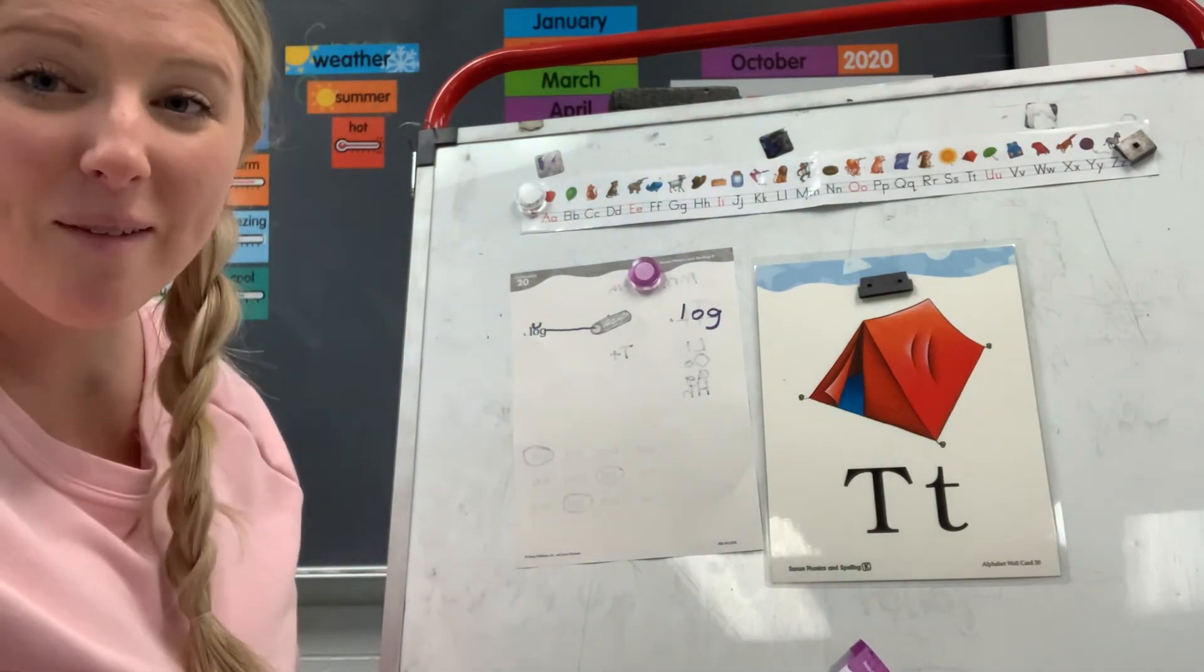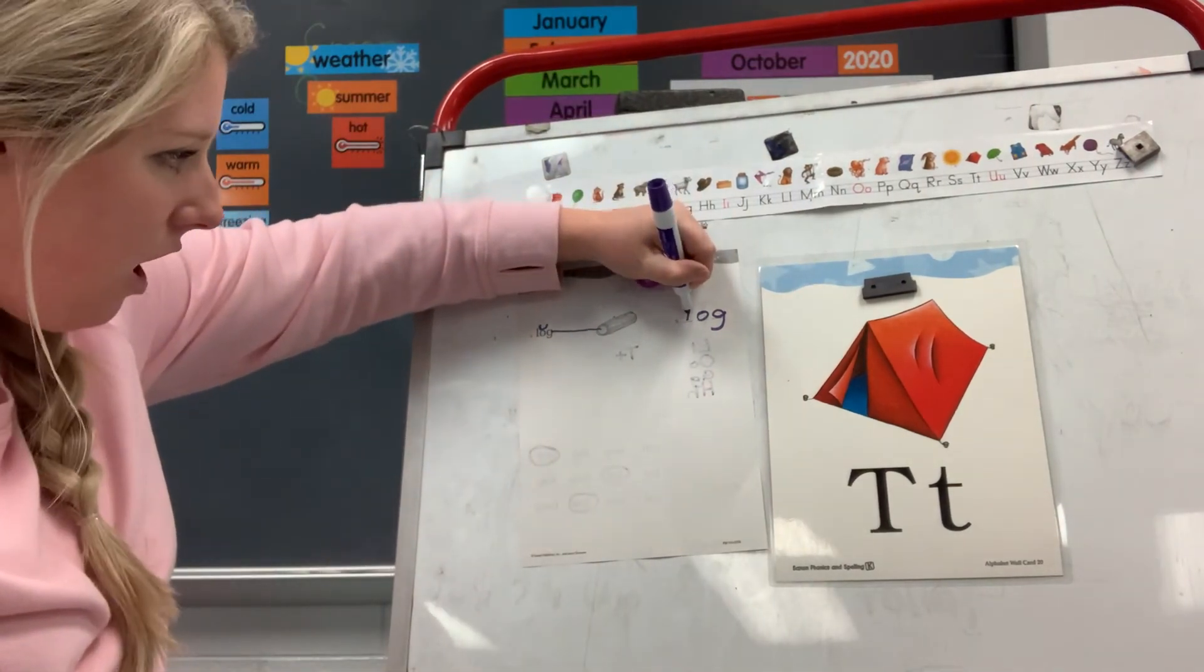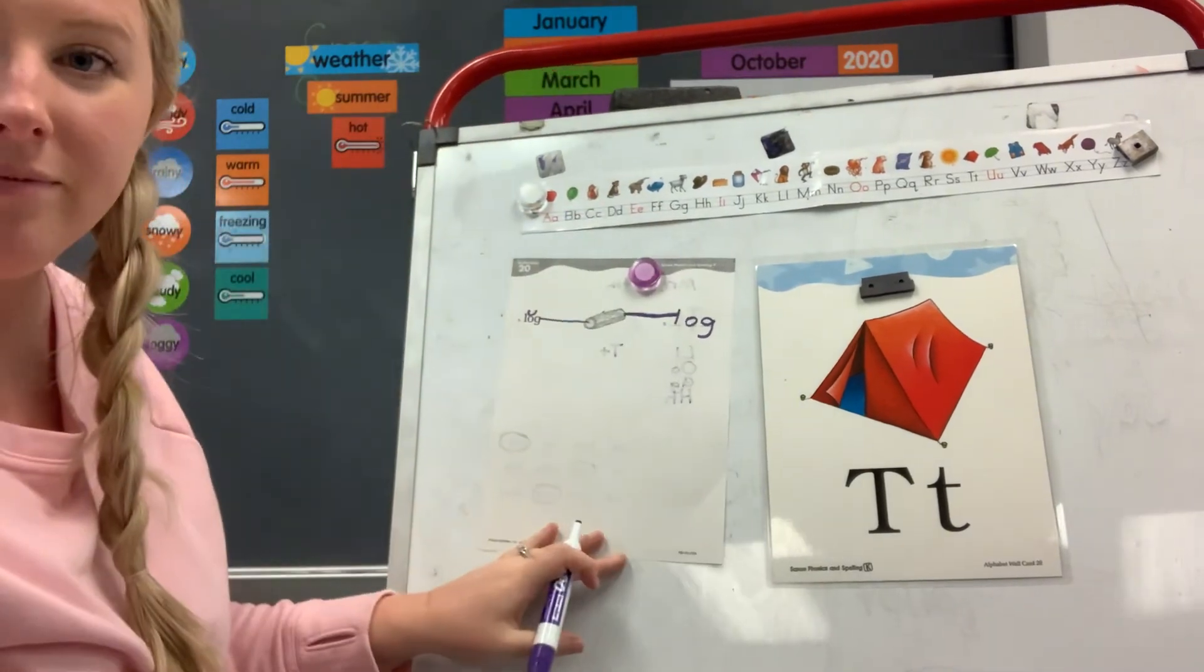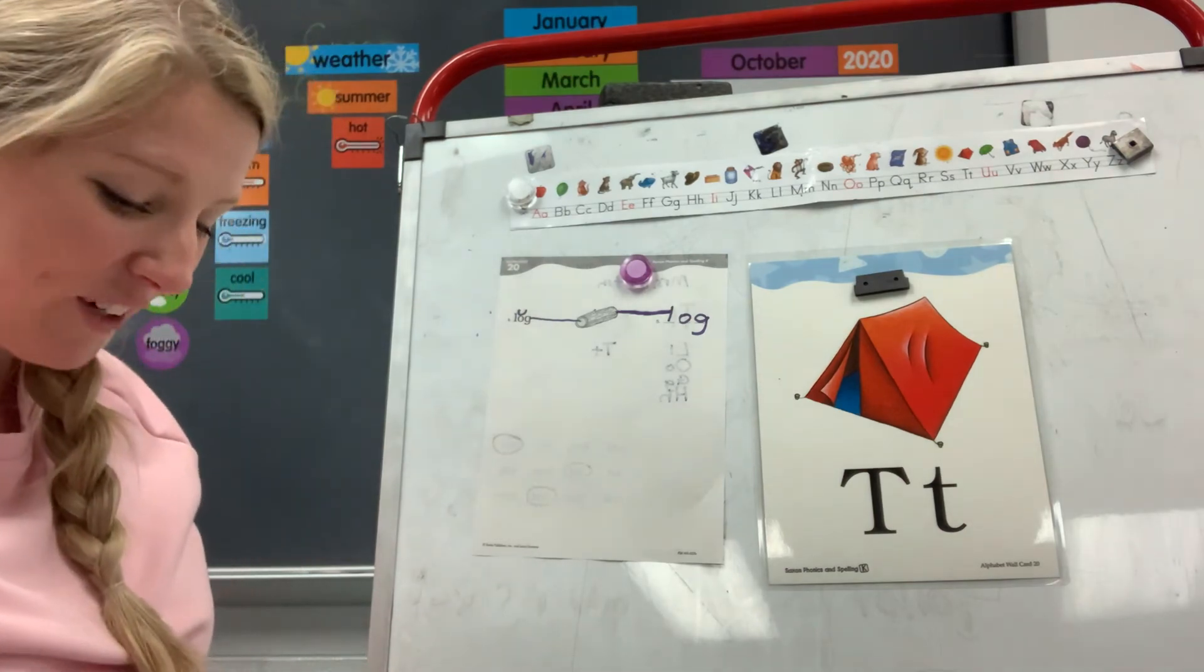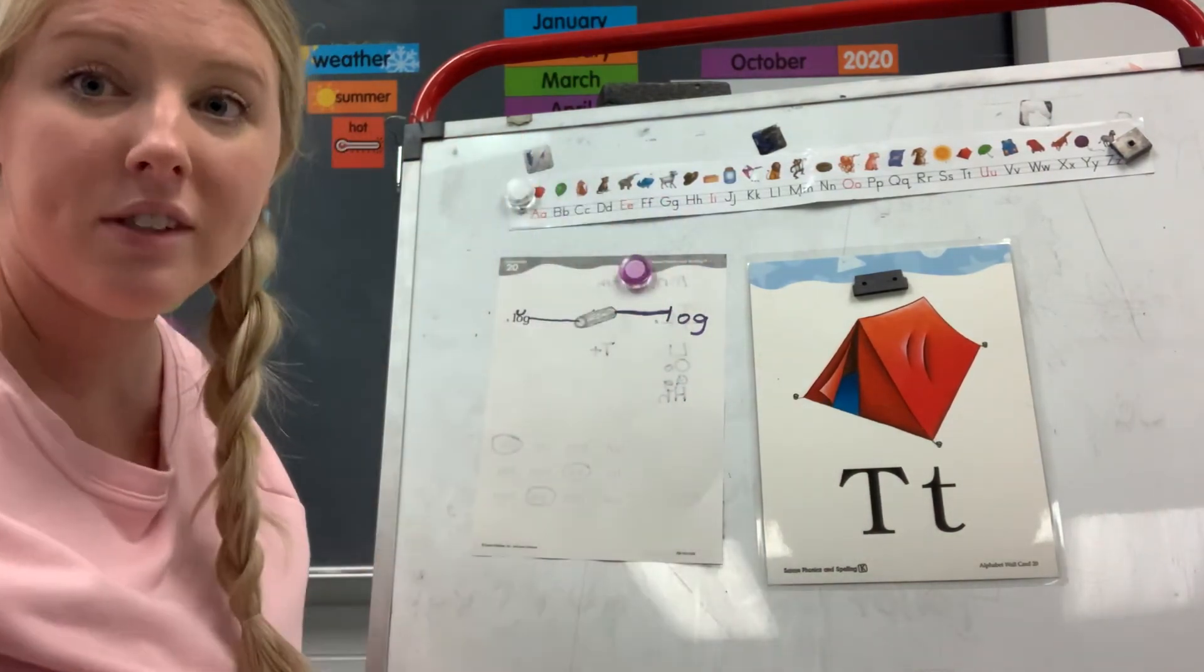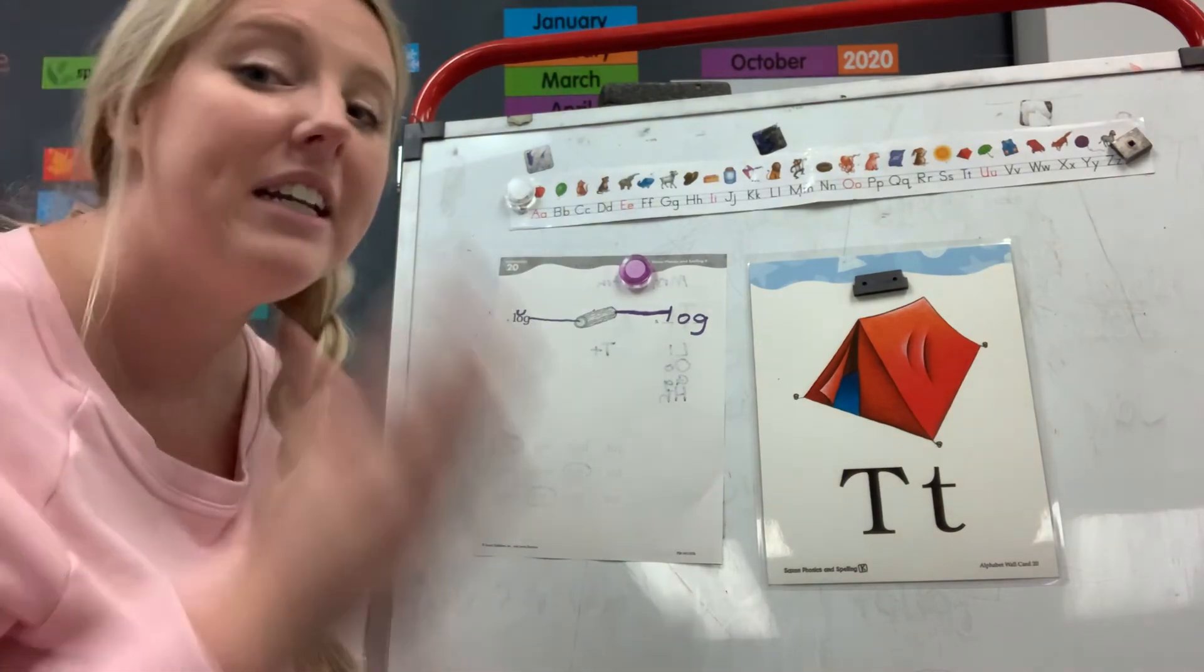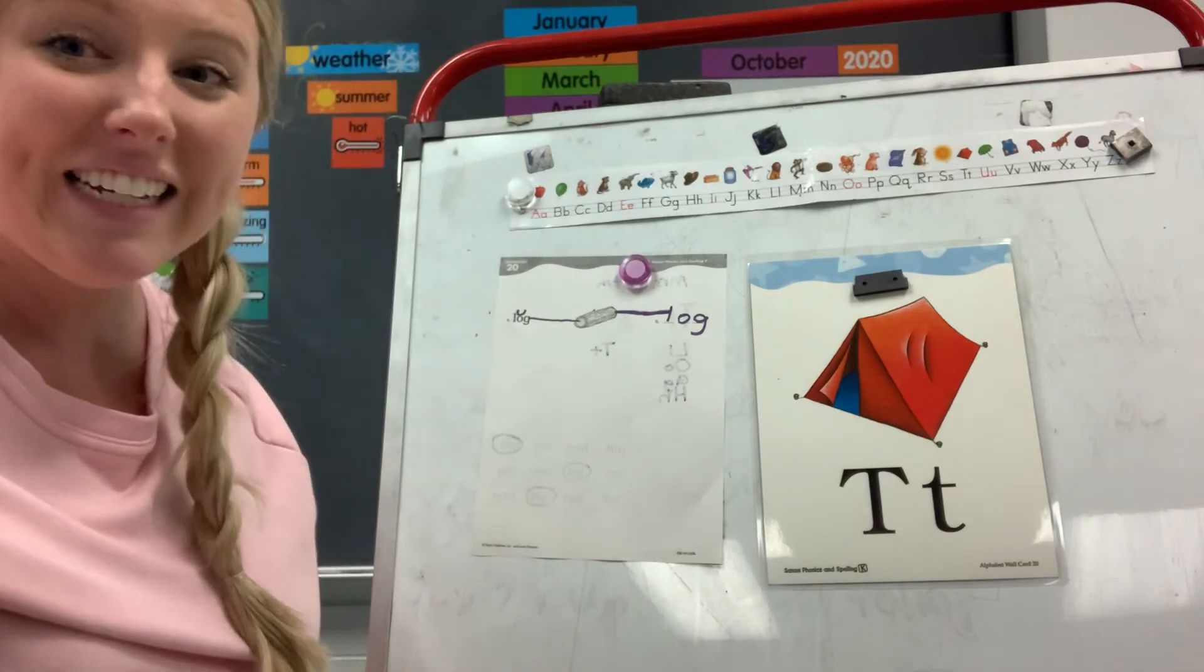Good job, my friends. Now I want you to draw a line from the word you spelled, log, to the picture of a log. So you should have two lines drawn. You spelled a word today. Good job, friends. Now here's what I want you to do. Take a picture of both sides today and show me so that I can see the awesome work that you guys did. You worked hard today. Pat yourself on the back. Good job, and I'll see you tomorrow, friends.